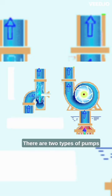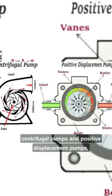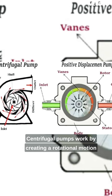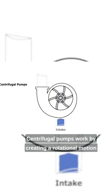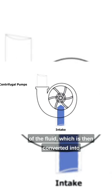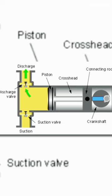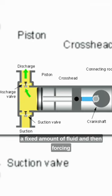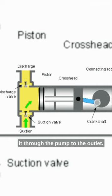There are two types of pumps: centrifugal pumps and positive displacement pumps. Centrifugal pumps work by creating a rotational motion of the fluid, which is then converted into pressure, while positive displacement pumps work by trapping a fixed amount of fluid and then forcing it through the pump to the outlet.